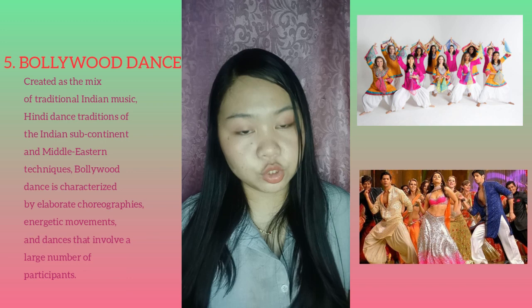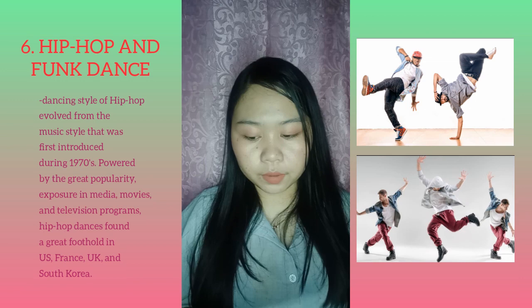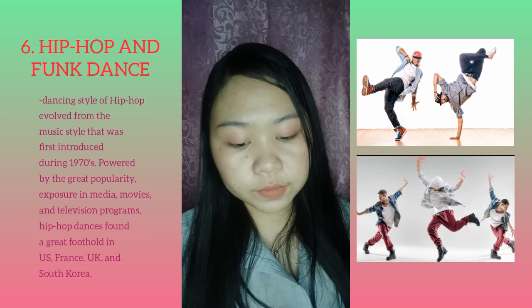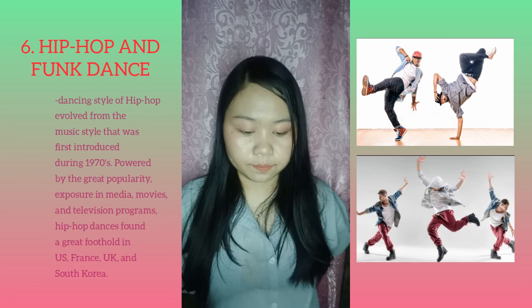The sixth type of modern dance is hip-hop and funk dance. This dancing style evolved from the music style that was first introduced during the 1970s. Powered by great popularity and exposure in media, movies, and television programs, hip-hop dances found a great foothold in the United States, France, United Kingdom, and South Korea. A very similar style called funk was also created during the 1970s and is today regarded as one of the most influential pieces of hip-hop dance style.